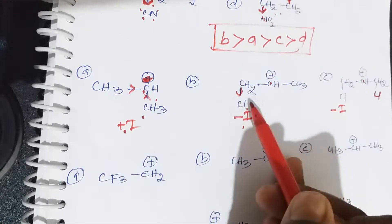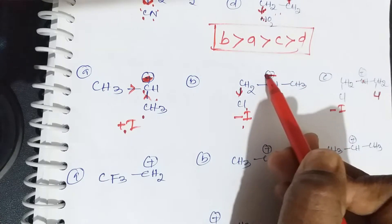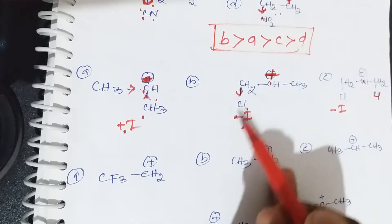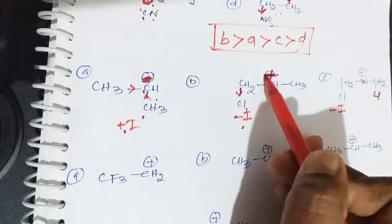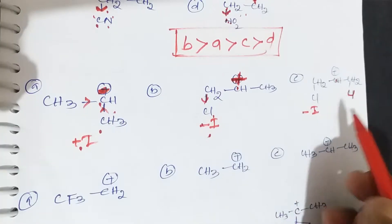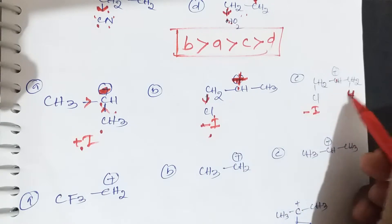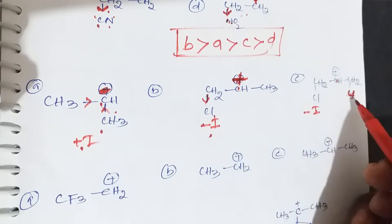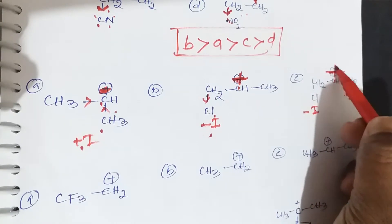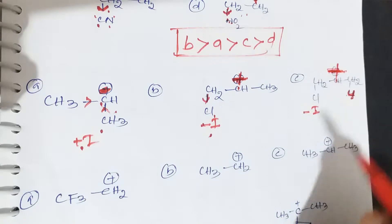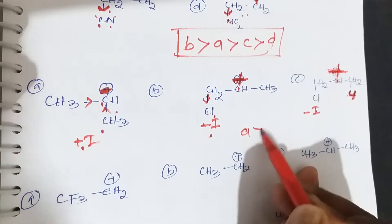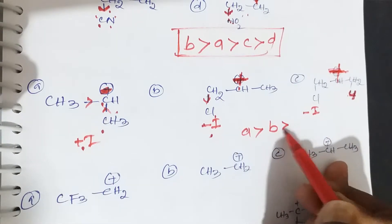In the first structure, positive charge is completely decreased due to plus I groups. In the second, positive charge slightly increases due to one minus I (Cl) group. In the third, two chlorines are electron withdrawing, so positive charge is more. Therefore, stability order is A > B > C.